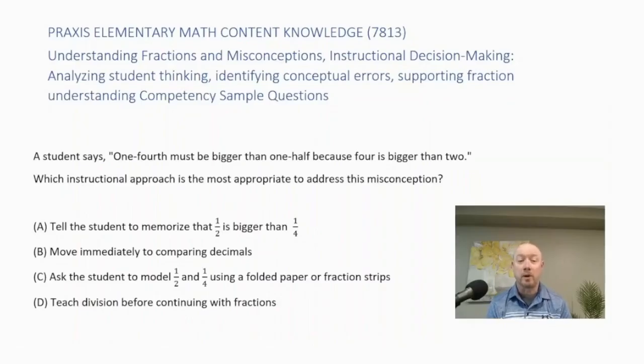A student says one-fourth must be bigger than one-half because four is bigger than two. Which instructional approach is the most appropriate to address this misconception? Is it A, tell the student to memorize that one-half is bigger than one-fourth? Is it B, move immediately to comparing decimals? Is it C, ask the student to model one-half and one-fourth using a folded paper or fraction strips? Is it D, teach division before continuing with fractions?